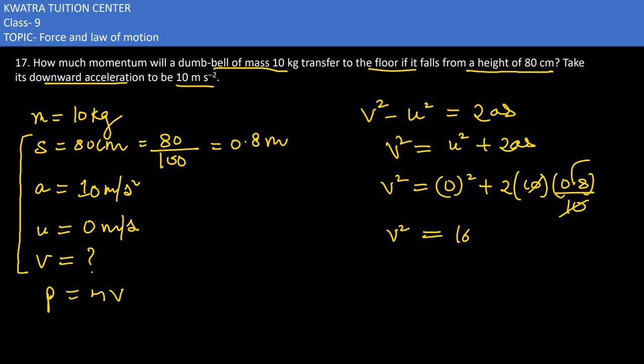v square is 16. Now what can be v value? It will become v value would be root 16, plus minus root 16. It can be positive, it can be negative. And root 16 we can write as 4 square, so we get the value as plus minus 4 meter per second.